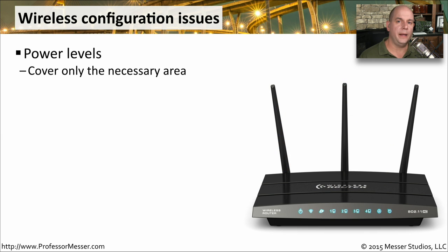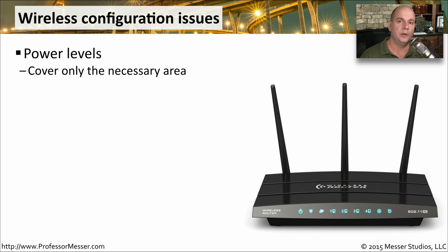When you're working with many access points, you have the option to define what the power level is going to be. You should set it as low as possible so that the people within your building or area can use that wireless access point, but you're avoiding sending that signal outside of your building or into areas where you don't want someone to gain access to the network.